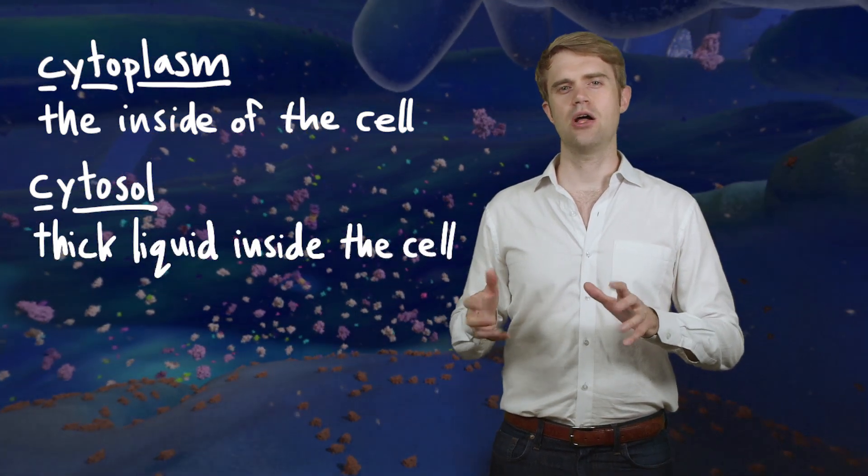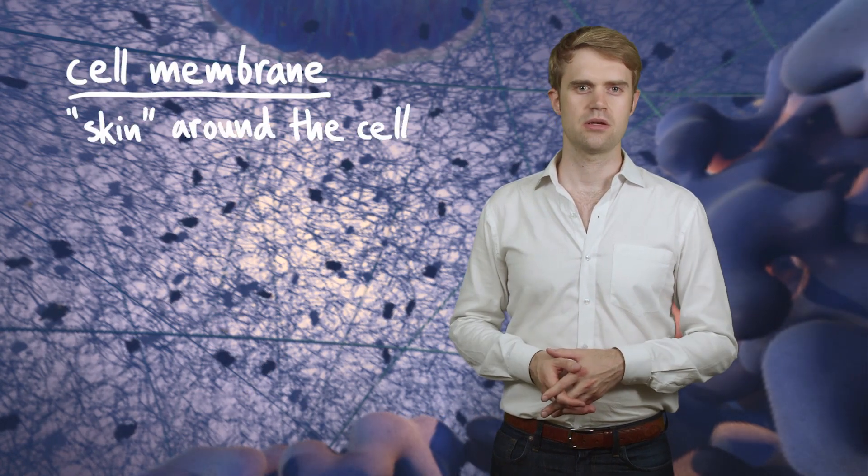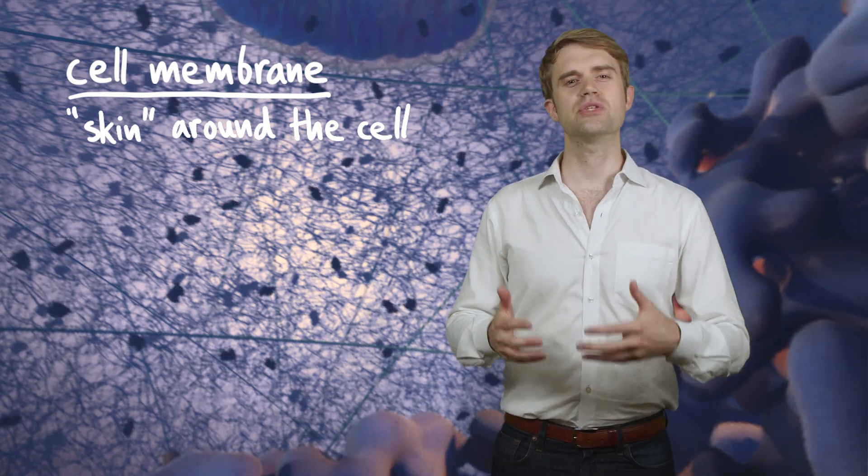What prevents the insides of the cell from just spilling out? Well, the cell is surrounded by something that's sort of like a flexible skin. It's called the cell membrane, and you can kind of see it in some places. It keeps the insides of the cell in and the outside out.